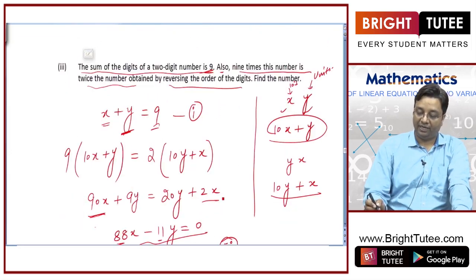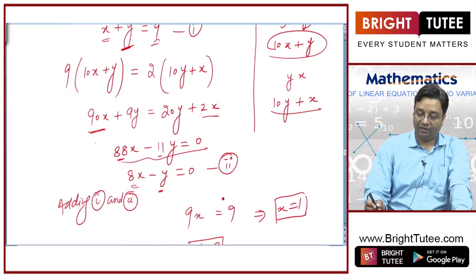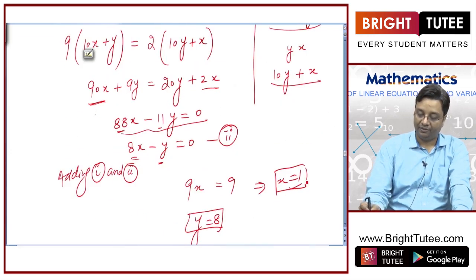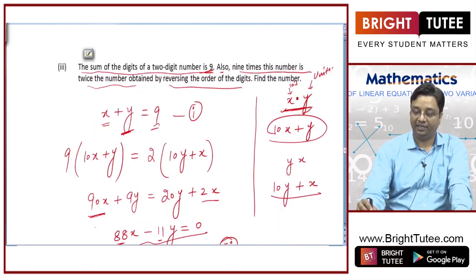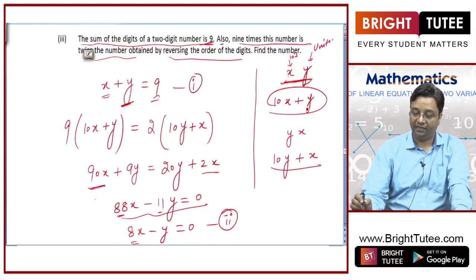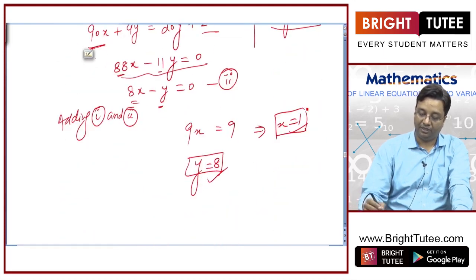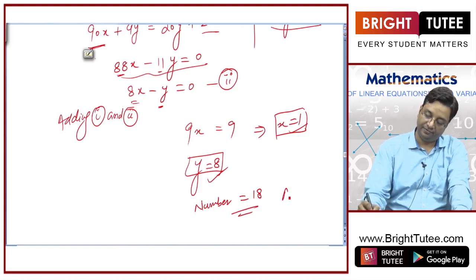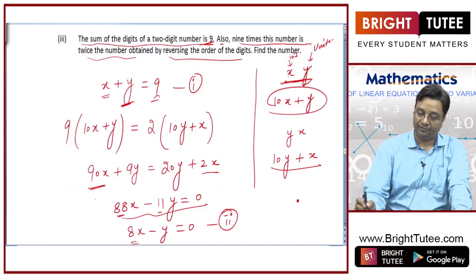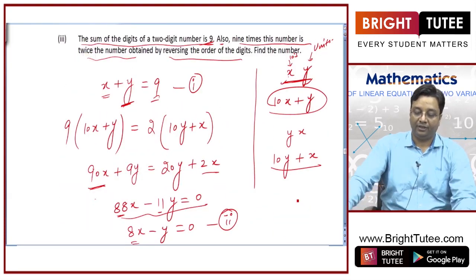Now I have the value of x equal to 1 and y equal to 8. So, the number is 18, where x is the tens digit and y is the units digit.